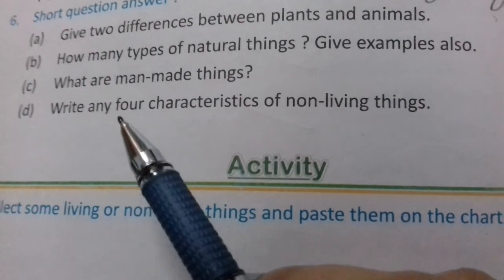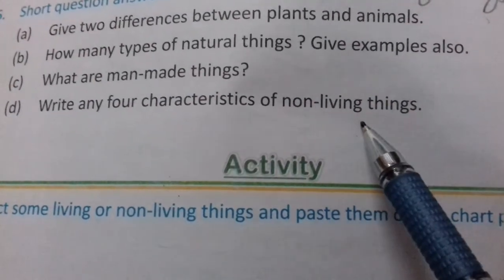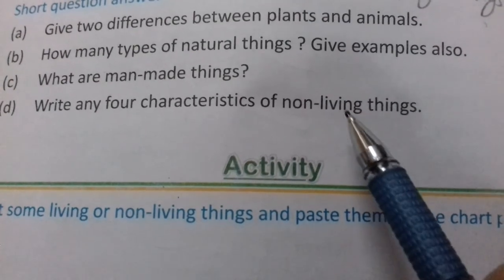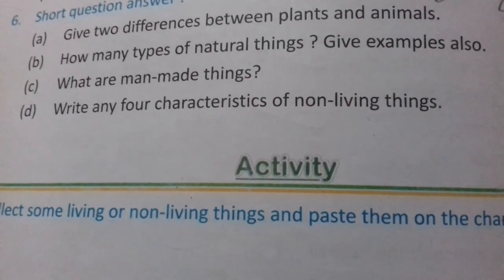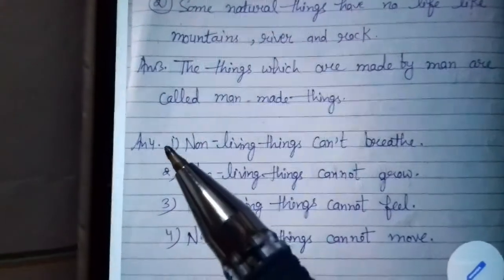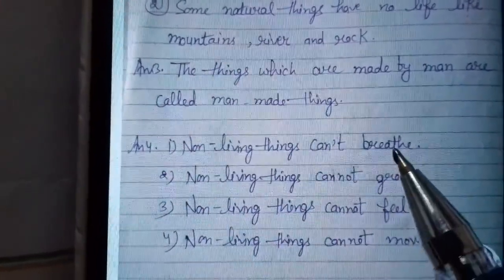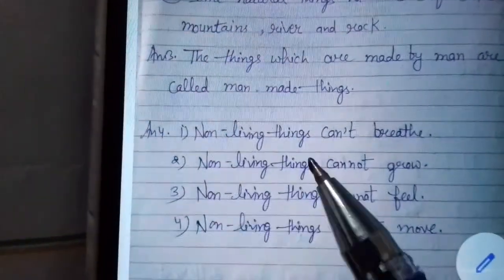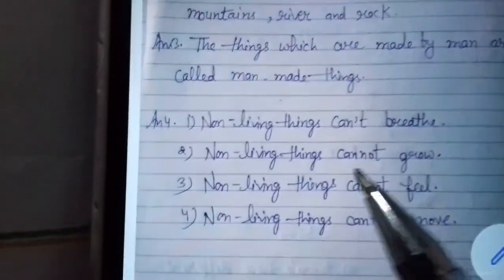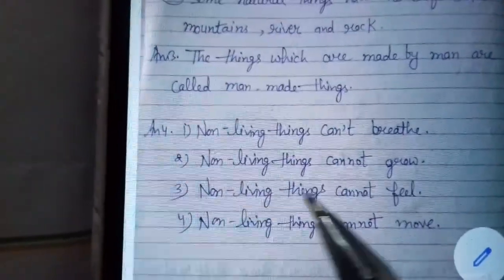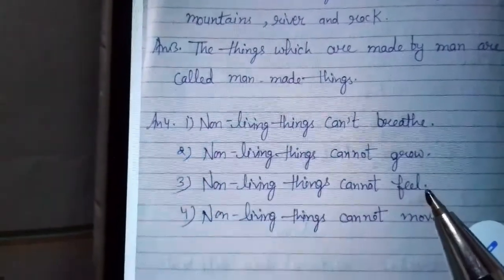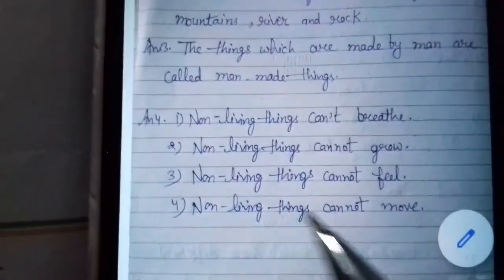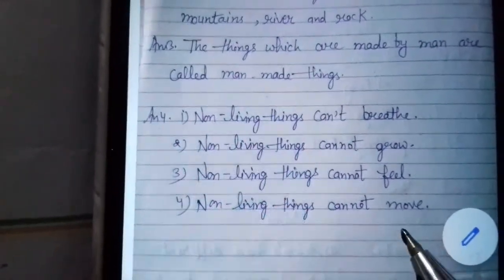Question number four: Write any four characteristics of non-living things. Four characteristics are: First, non-living things cannot breathe. Second, non-living things cannot grow. Third, non-living things cannot feel. And fourth, non-living things cannot move — they cannot shift from one place to another.